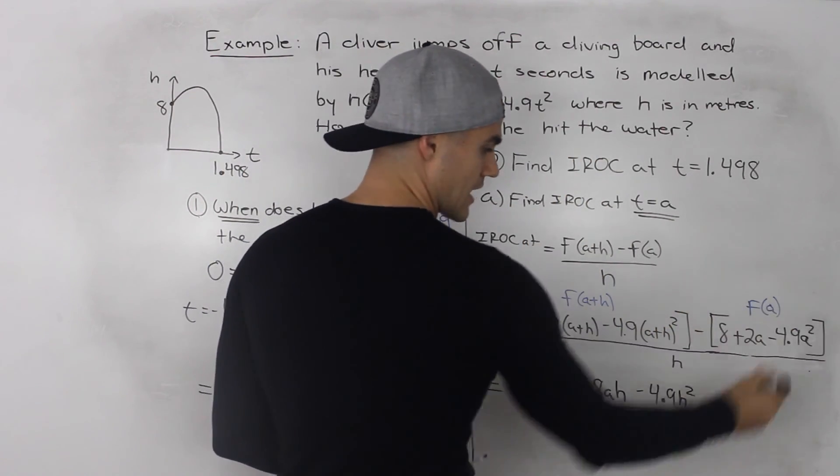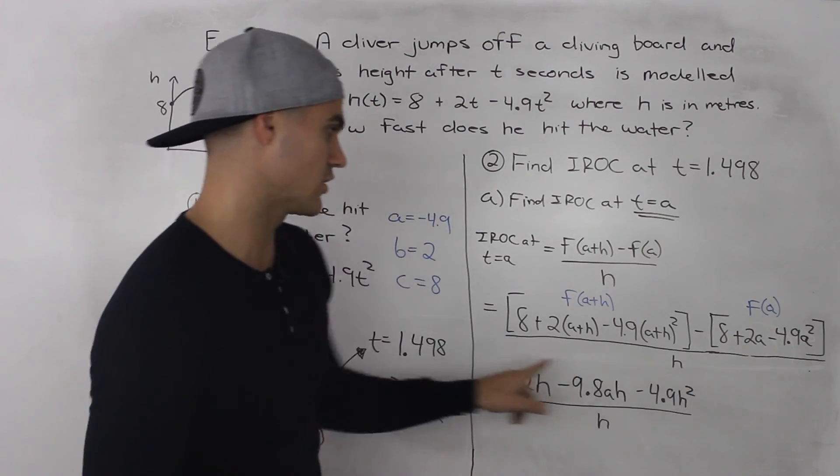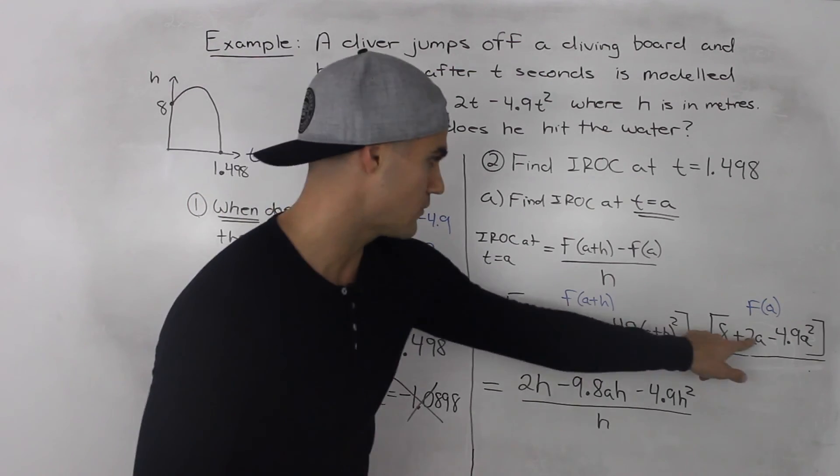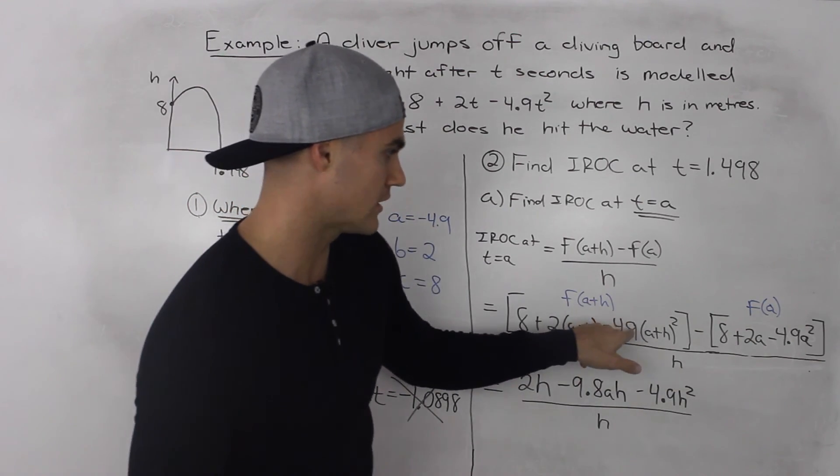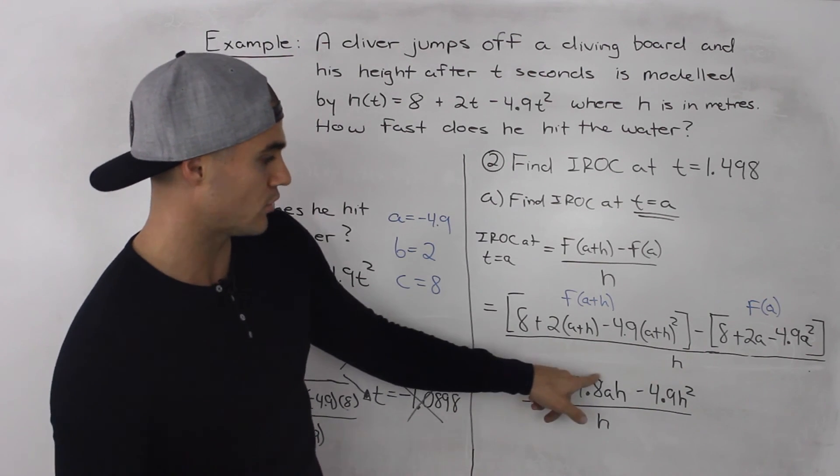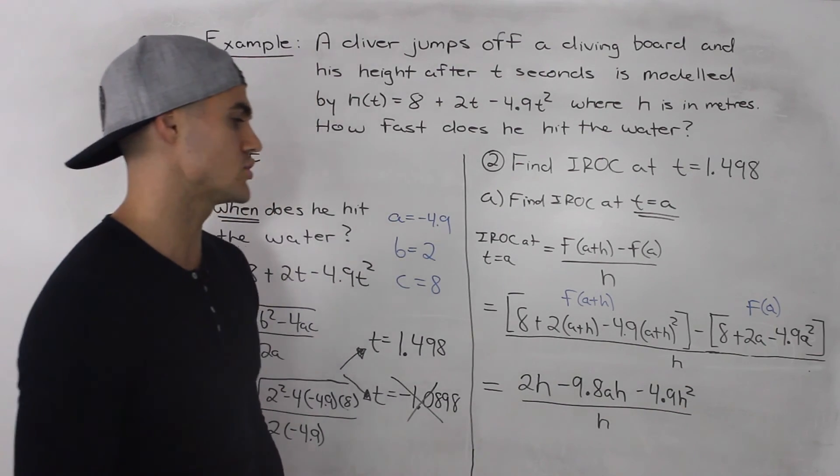You would end up with this expression here. A lot of stuff would cancel out like this 8 and then the 2a would cancel out, then the negative 4.9a² would cancel out and you'd be left with 2h - 9.8ah - 4.9h² all over h.